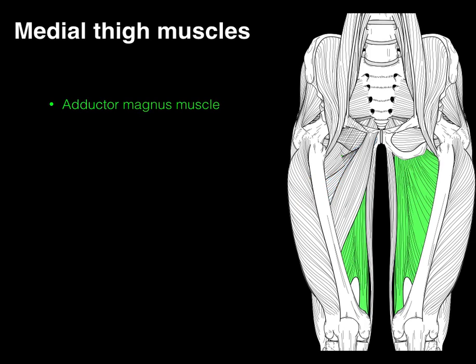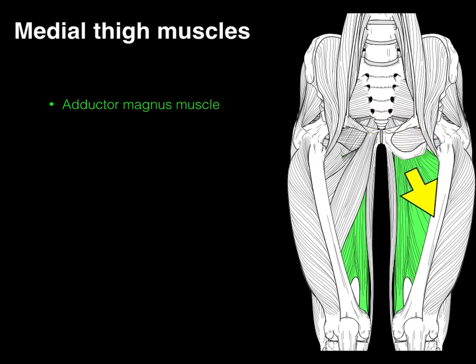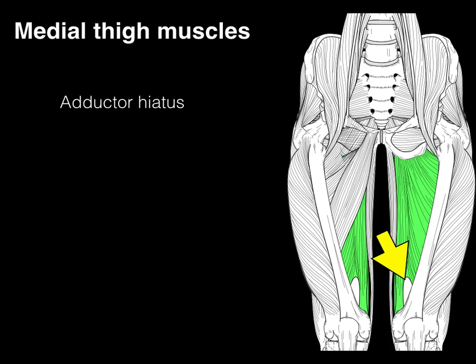Our adductor magnus gets its name because it's really big. It's going to come off the ischium and part of the pubis and course down all along the linea aspera on the back of the femur, as well as this little bump on the medial part of the femur called the adductor tubercle. Because there's a space between the linea aspera attachment and the adductor tubercle, there's an opening called the adductor hiatus, which means opening.